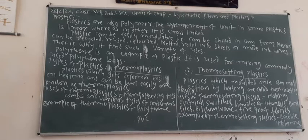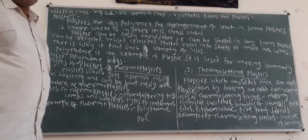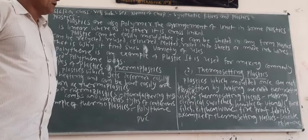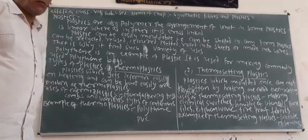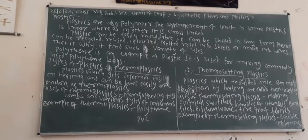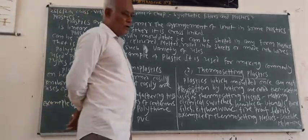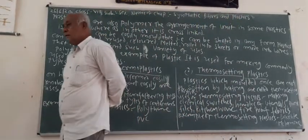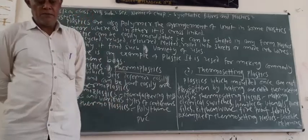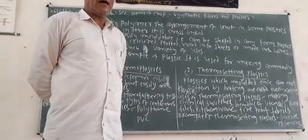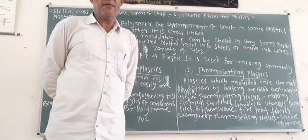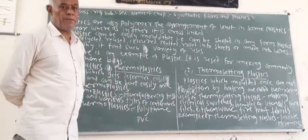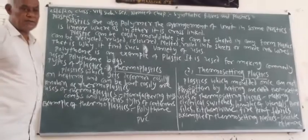Polythene is an example of plastic. We know that polythene is commonly used for making polythene bags. When we go to the market for shopping, the shopkeeper gives the required items in polythene bags. This polythene bag is made of polythene, and polythene is a plastic.